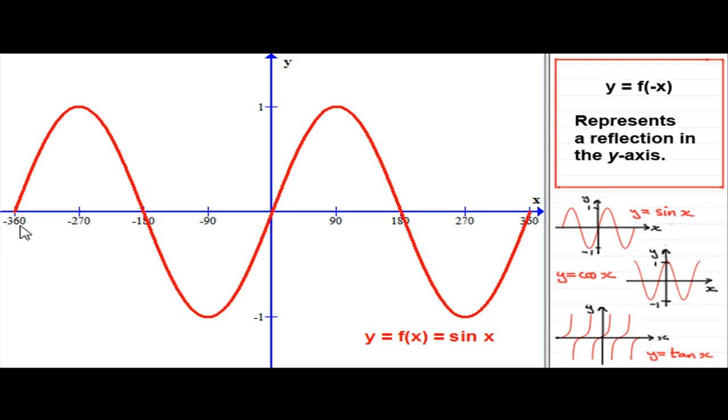I've drawn it here going from minus 360 degrees to 360 degrees, and it goes from minus 1 to 1. So if we're drawing this graph, y equals f of minus x, what we do is replace any x with a minus x in the original graph of y equals f of x. So this x here, as you can see, is replaced with a minus x. And this represents, according to this rule, a reflection in the y-axis.